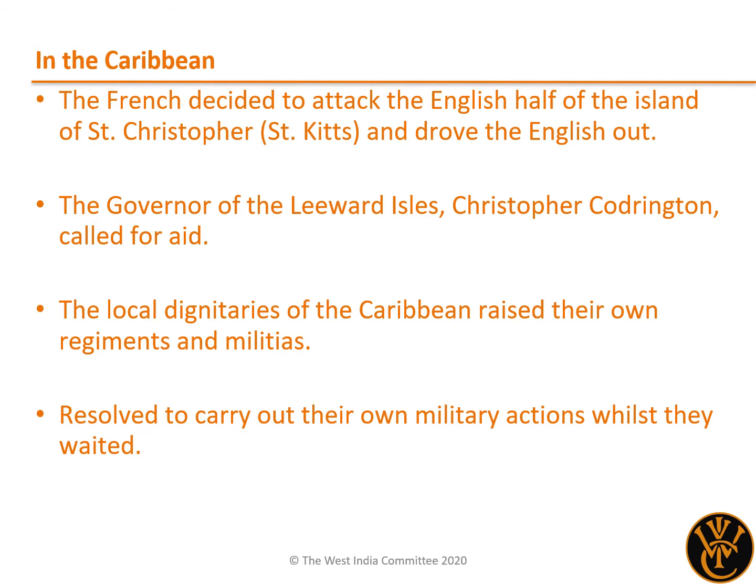The Allied territories faced superior French military power in the region. The French were able to make initial gains from the Grand Alliance, with the capture of the Dutch island of St Eustatius in April 1689, and then succeeded in forcing the English off the shared island of St Christopher, more popularly known as St Kitts, two months later. Due to these French successes and the danger of the threat he faced, Christopher Codrington, a West Indian planter, commander of the militia, and governor of the Leeward Islands colony, requested aid from England.